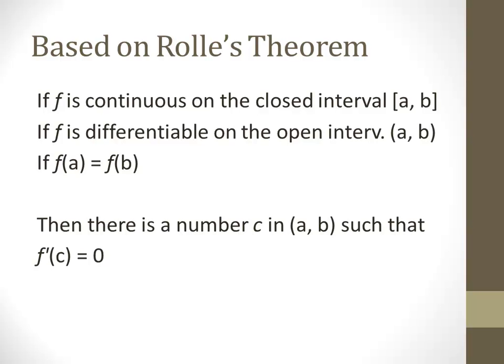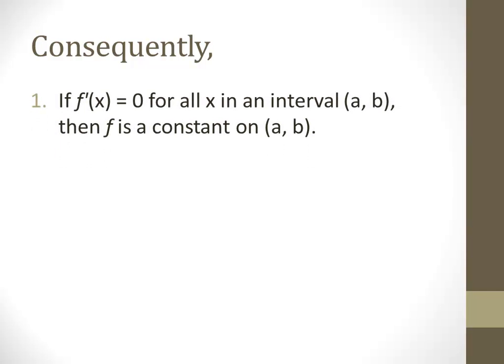There are a couple of theorems that are consequences of the mean value theorem. For example, if the derivative of a function f equals zero for all x on an interval [A, B], then f must be a constant on A to B. This makes perfect sense: if the slope is zero — if the slope is horizontal for the entire stretch from A to B — then you're basically looking at a horizontal line, meaning f is a constant, like y equals three.